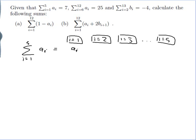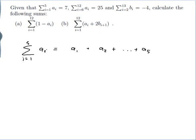So ai when i equals 1 is a1, plus ai when i equals 2 is a2, plus and so on up to a5. So that's what that sum means.